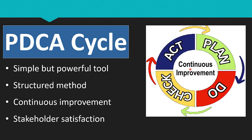Businesses or organizations can systematically address their problems and implement solutions which lead the business to continuous improvement. Continuous improvement makes the organization satisfy the needs of its stakeholders such as customers, employees, vendors and so on. We are living in a rapidly changing business situation; if we fail to adapt with this change, our business will face crisis or be pushed out of the market.